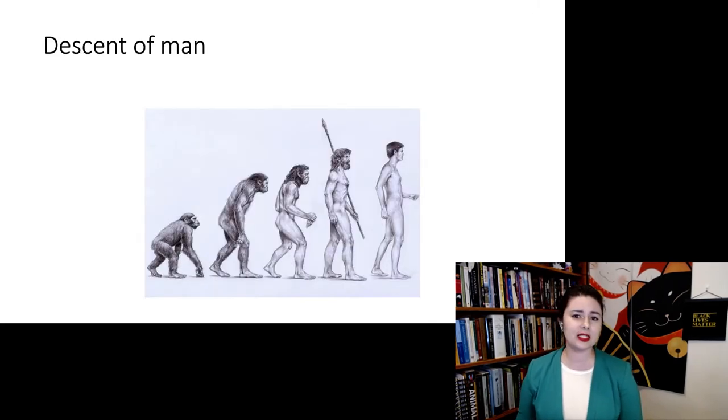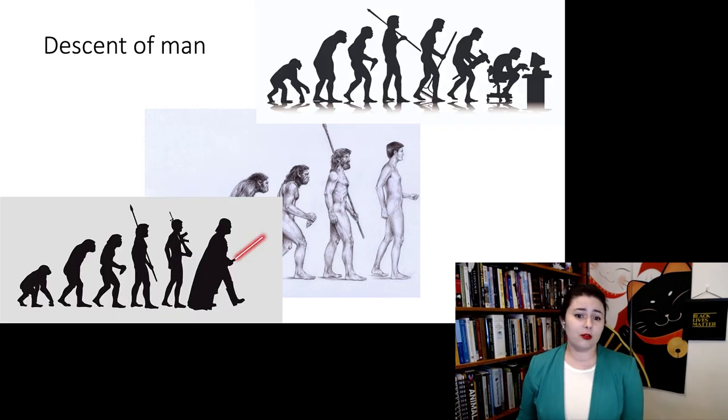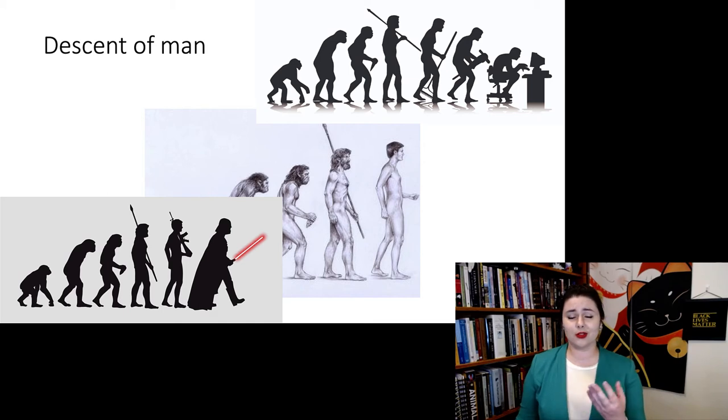So you've probably seen an image similar to this before. This is called the Descent of Man. So we have this lineage of starting from a chimpanzee-like thing, gradually getting more upright, losing our hair, starting to use stone tools, starting to use hafted weapons, and then finally us. My favorite use of this meme is when we create these other ones, showing us going back to stooping at our computers, or of course, the lightsaber. But as we just looked at with all of those other species, this linear depiction is not a good way to show human evolution.